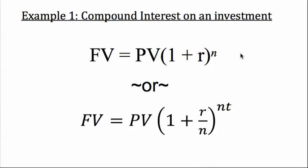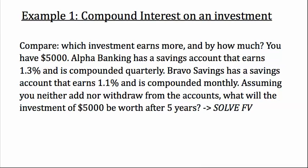Example number one. This is going to take advantage of these kinds of formulas. You're not going to be doing these manually. The solver will do it for you. Compare which investment earns more and by how much. You have $5,000. Alpha Banking has a savings account that earns 1.3% compounded quarterly. Bravo Savings has a savings account that earns 1.3% compounded monthly. Assuming you neither add nor withdraw from the accounts, what will the investment of $5,000 be worth after five years?